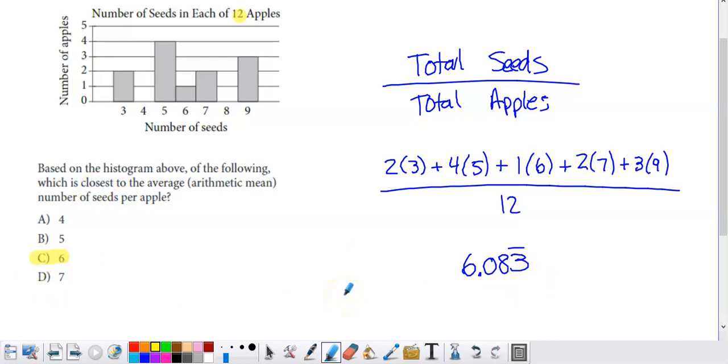One other thing that's probably good to do in a situation like this is check your units. We're supposed to figure out seeds per apple. So think about the units of what we have here. We have the total number of seeds in the numerator and 12 apples in the denominator. So this would be 6.083 seeds divided by apples, or seeds per apple.